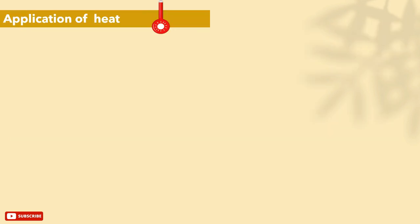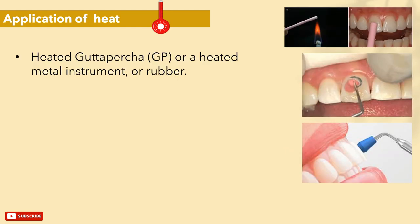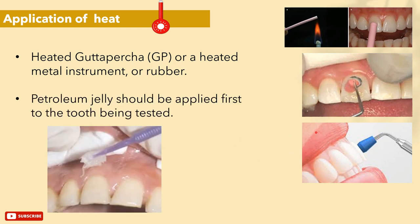For application of heat: these tests are less commonly used because they are considered less accurate than the cold test and more likely to cause damage to the tooth or surrounding soft tissues. If you are going to apply heat to the tooth, you can use heated gutta-percha, a heated metal instrument, or rubber. Before applying heat, always apply petroleum jelly first as an isolator to avoid extra damage to the tooth surface.